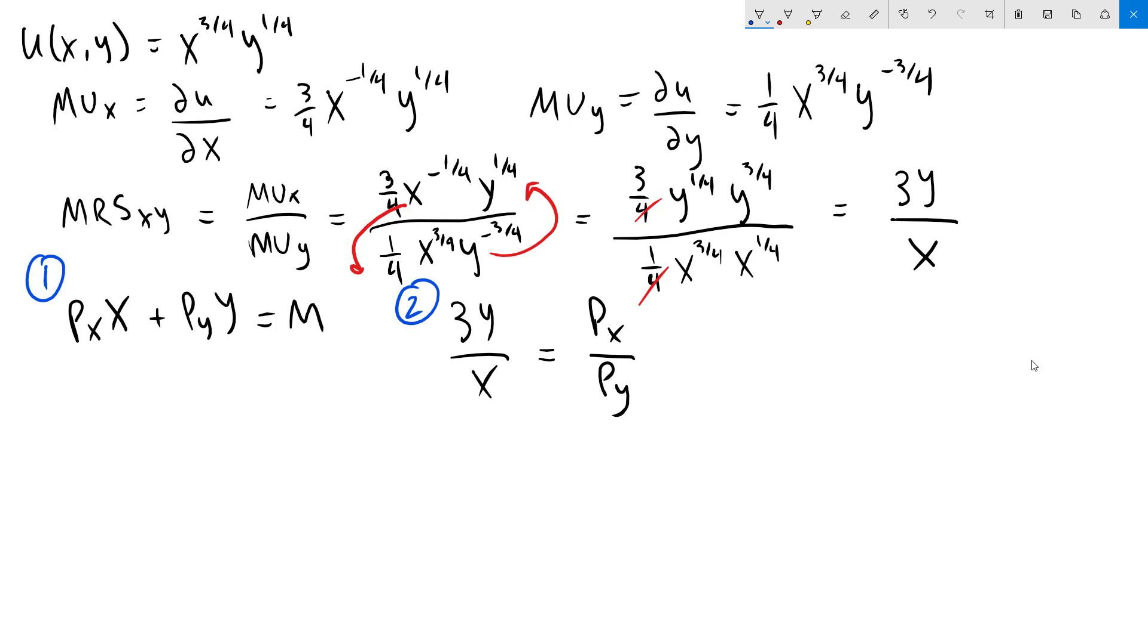We now have two equations with two unknowns. That's x and y, and we're ready to solve. What I'm going to do is take equation number two, and I'm going to multiply both sides by Py. That'll give me 3 Py y over x equals Px. Then I'm going to multiply both sides by x, and that's going to give me 3 Py y equals Px x.